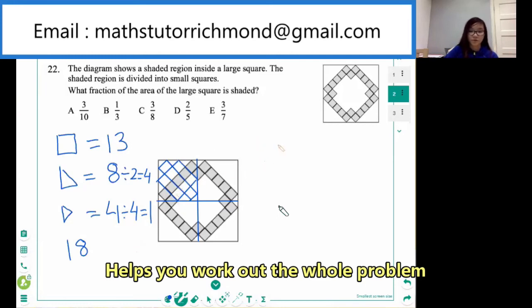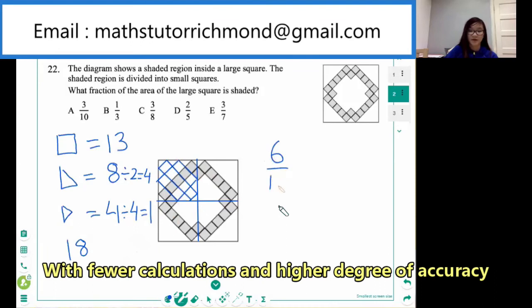So the fraction in this quarter would be six over 18, which is equivalent to one third.